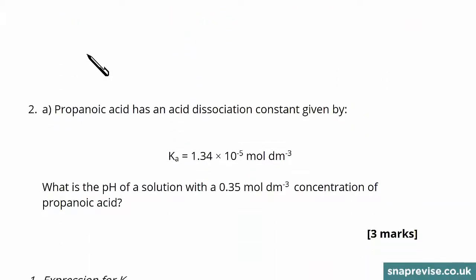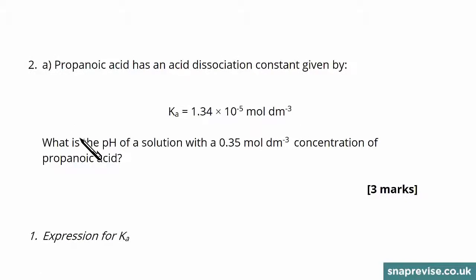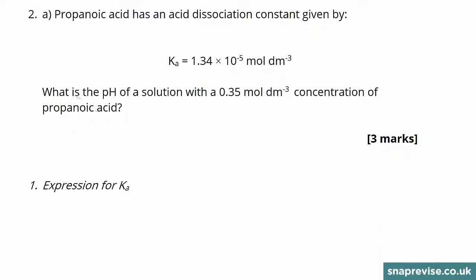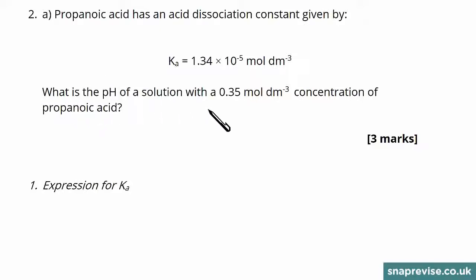Now let's have a look at question number 2, which tells us that propanoic acid has an acid dissociation constant — we're given the Ka for propanoic acid. We're asked what the pH of a solution with a concentration of 0.35 moles per decimetre cubed of propanoic acid is.